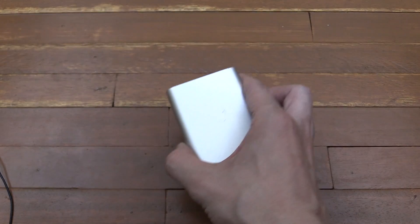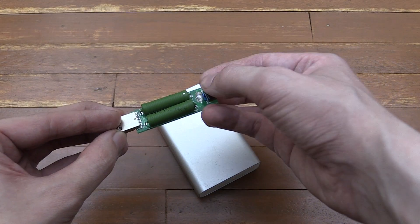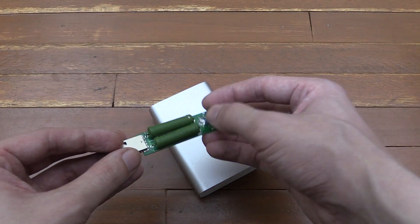So the best way to do it is to use a dummy load like this. Now this is basically just two resistors and a switch to switch between 1 amp and 2 amp. Now to simulate a regular cell phone, I'm going to be using just 1 amp.